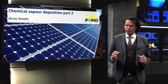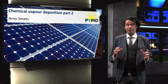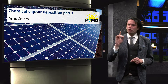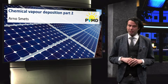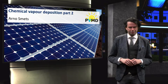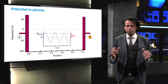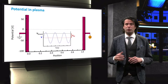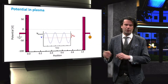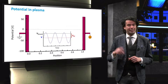In the previous video we started our discussion of plasma-enhanced chemical vapor deposition. We defined the floating potential and the DC offset. We will now continue the discussion with the potential in a plasma. We introduce an x-axis denoting the position in the plasma, ranging from the grounded electrode on the left to the powered electrode on the right. The y-axis denotes the potential in volts at each position.